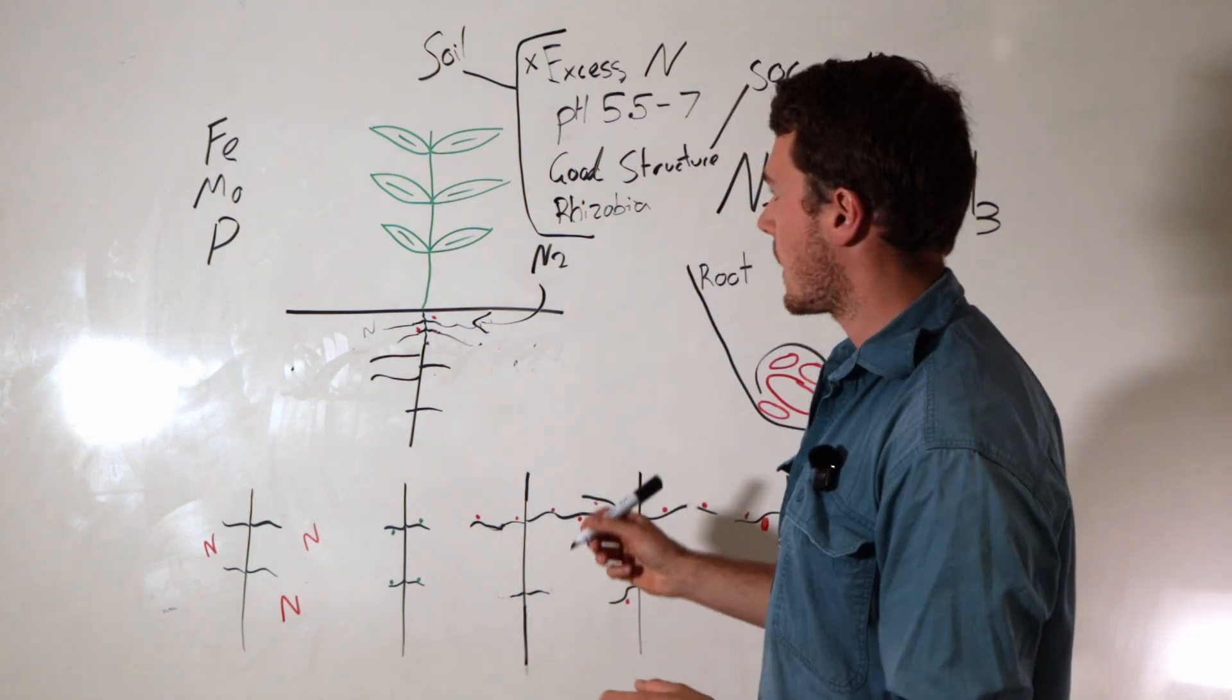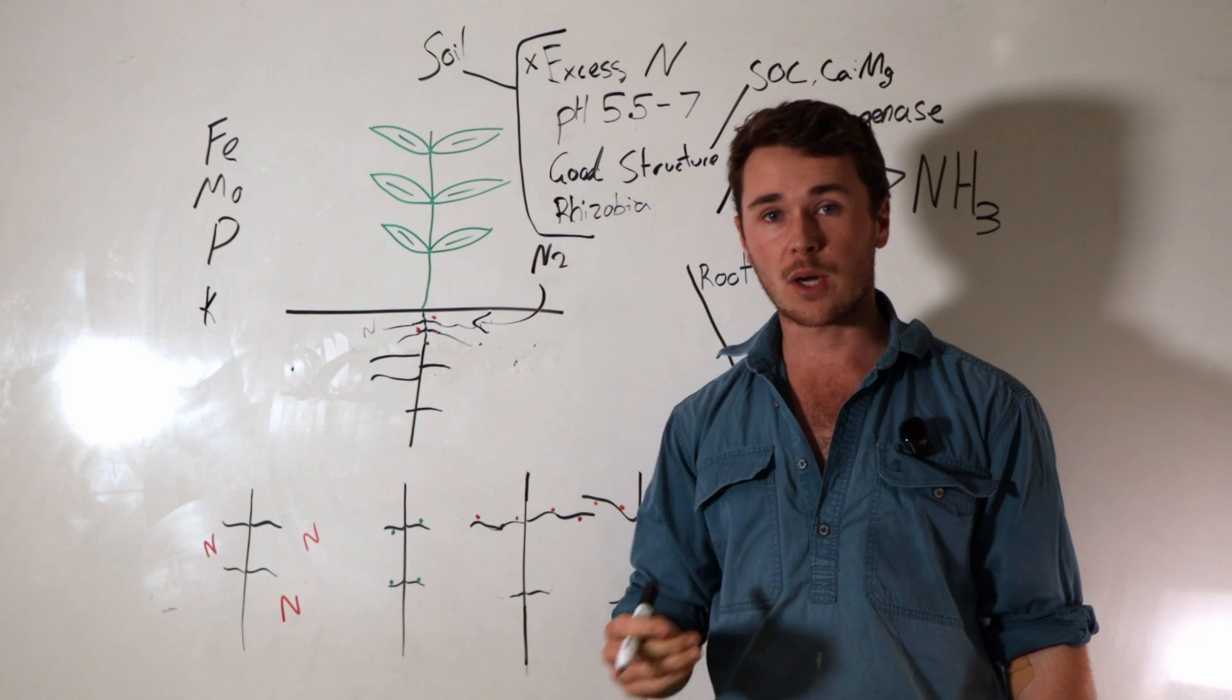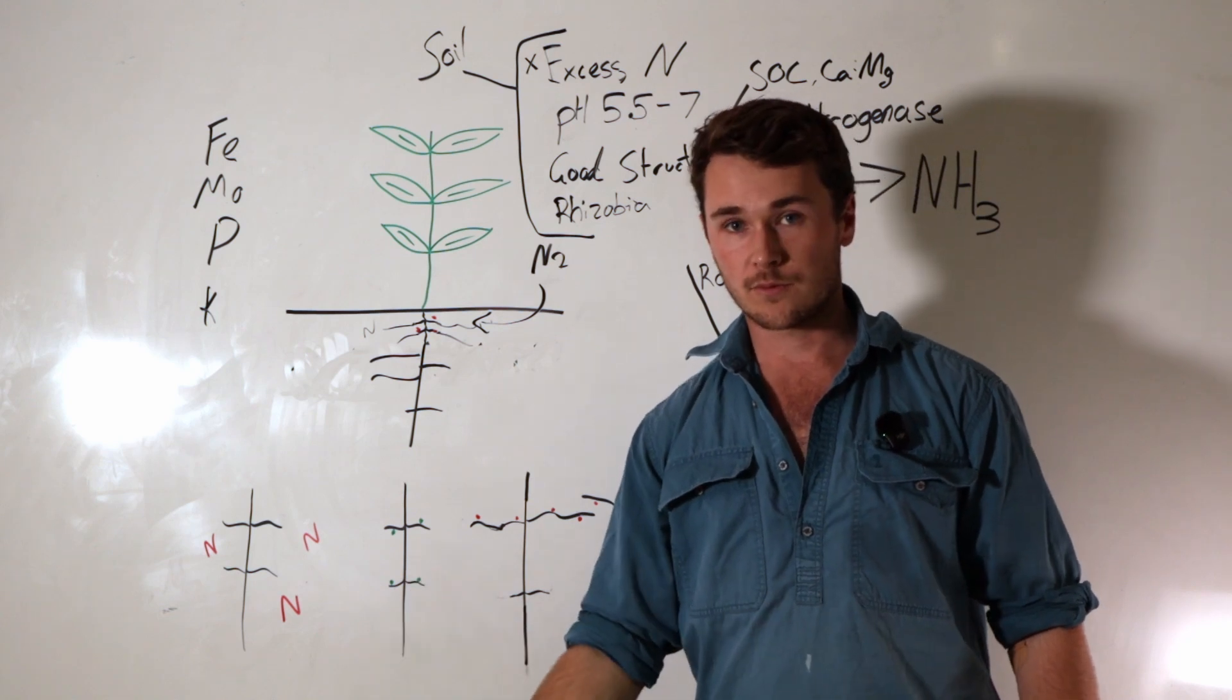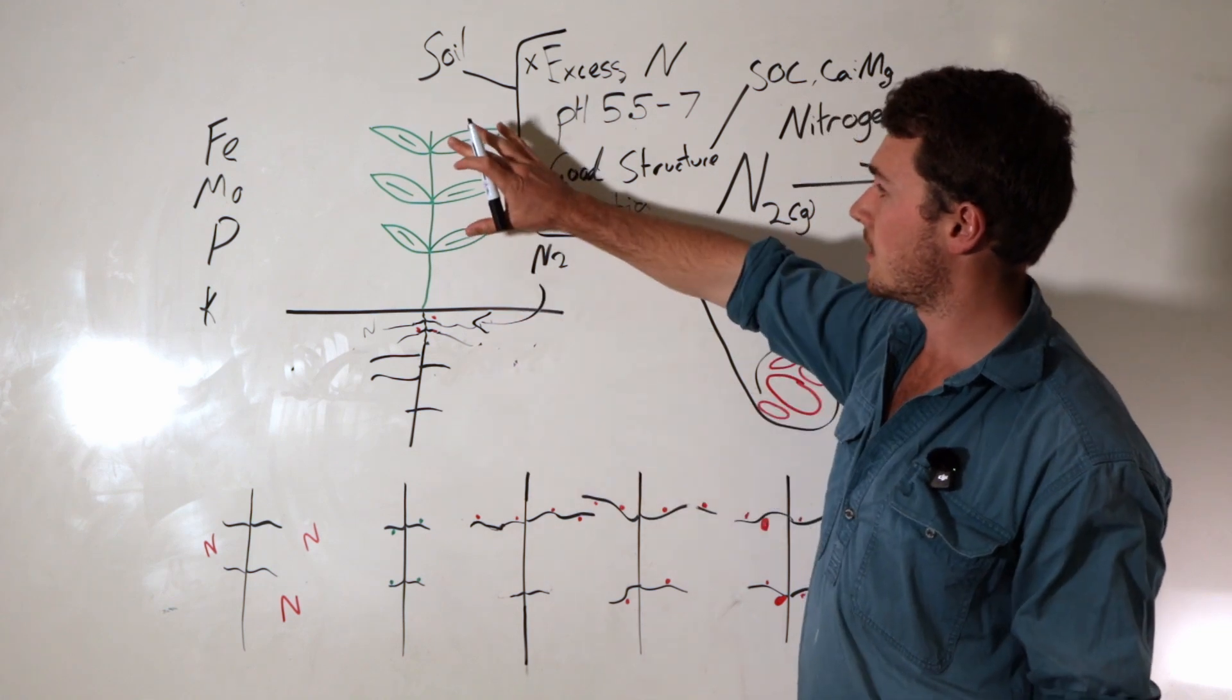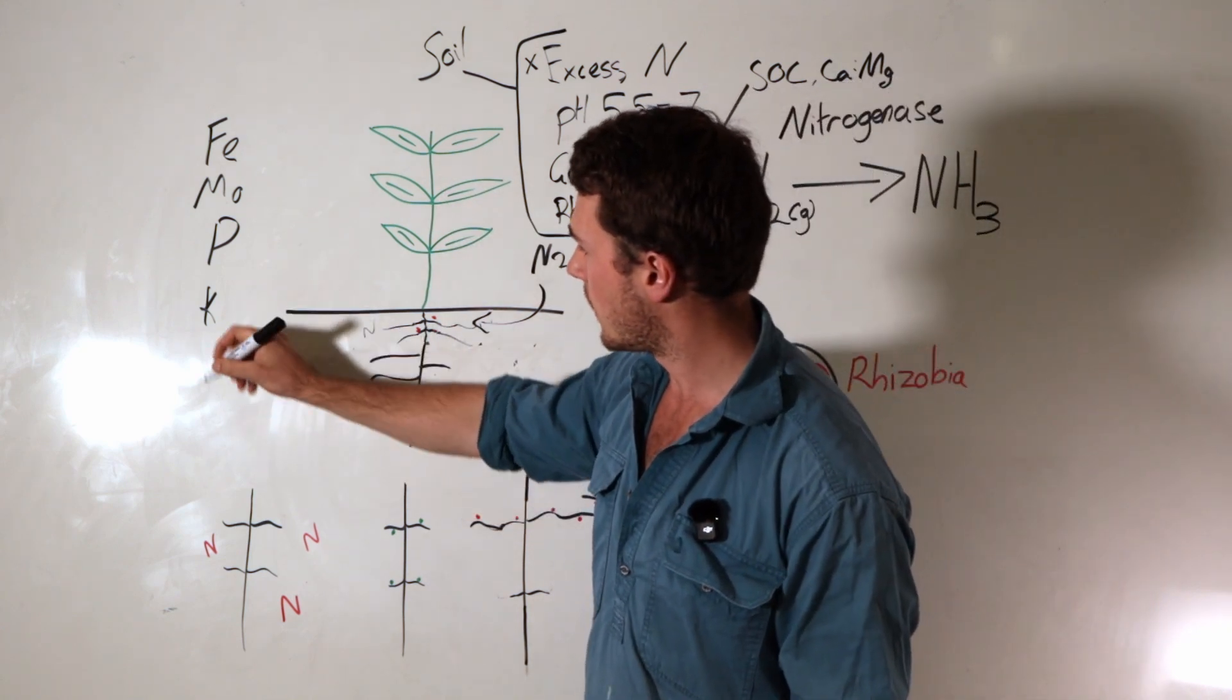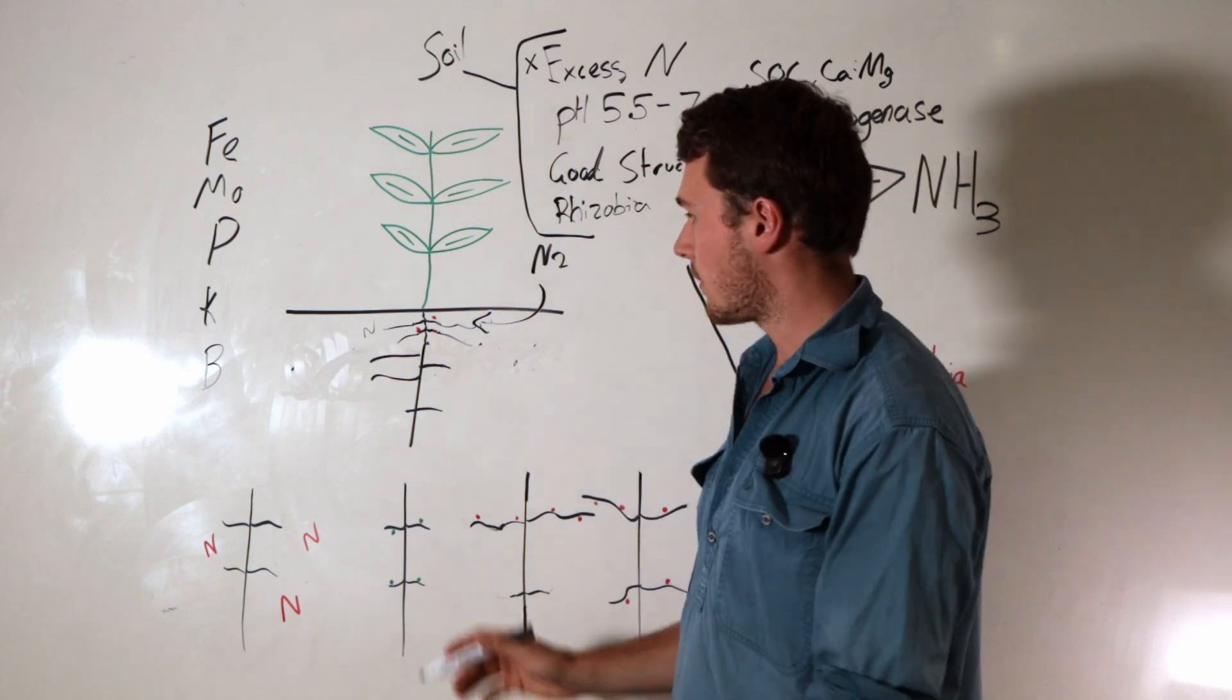So the next mineral, we want to make sure we have a good amount of supply is potassium. Potassium is required for the translocation or assists the translocation of carbohydrates. Remember, this process only works because the plant is giving the bacteria carbohydrates or food in exchange for nitrogen. So it's very intensive in that. We want to make sure transporting our sugars from the top of the plant into our roots. Potassium and boron. I'll put another one in here. Boron is required for that. So we want to make sure we have both of these. It's going to help move sugars into our roots.